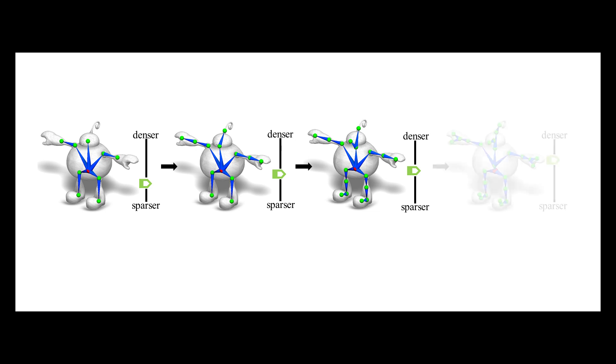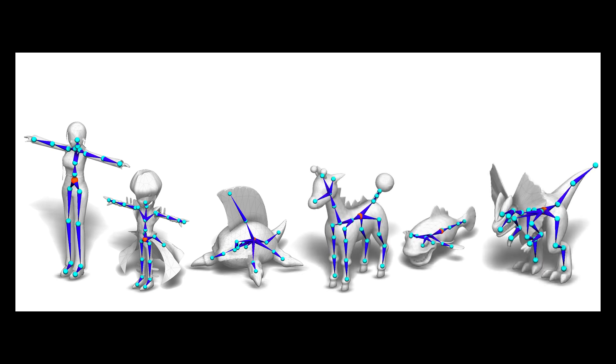RigNet accepts input from the animator in the form of a single parameter that controls the level of detail for the output skeleton. The architecture is trained on a dataset of diverse rigged characters mined online.